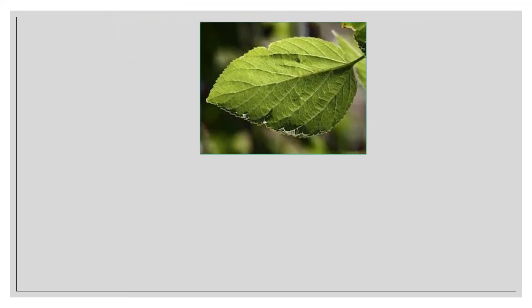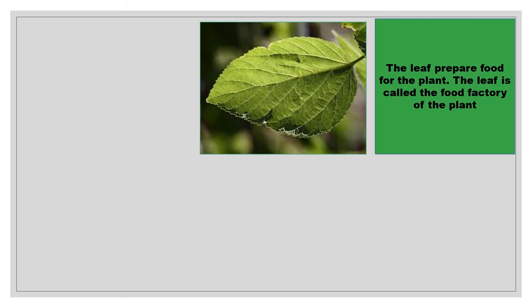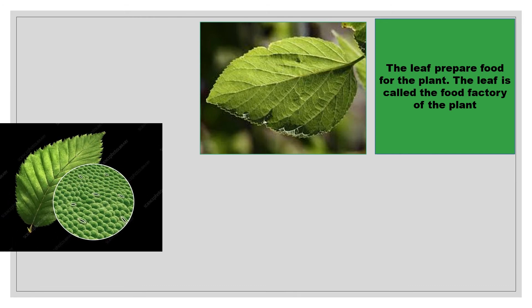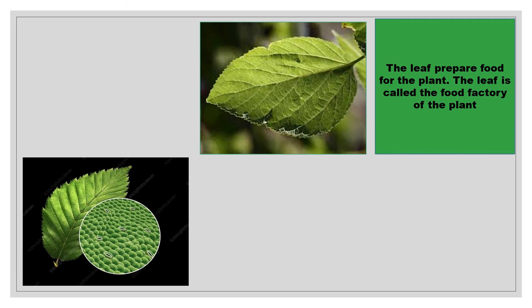The main function of the leaf is to prepare food for the plant, and that is why the leaf is called the food factory of the plant. The leaf has tiny pores on its underside. It is through these pores that the exchange of gases takes place. The leaves take in carbon dioxide and give out oxygen. Hence, leaves also help in respiration.